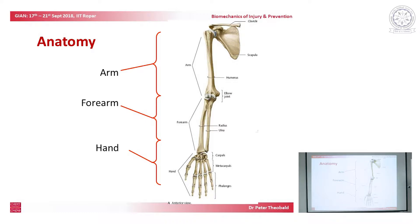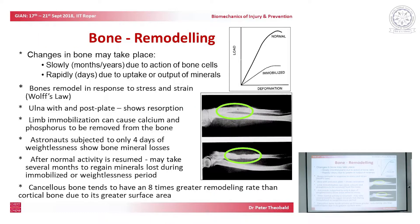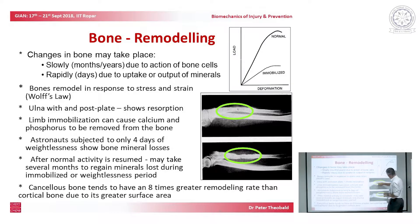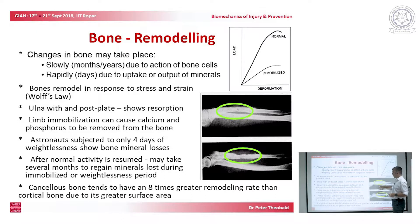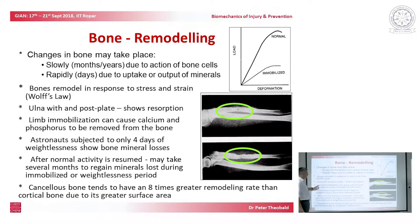This draws us to another bioengineering question: bone repair, and specifically the notion of bone remodeling. This is Wolff's Law, or stress shielding. Wolff's Law states that bones respond to stimuli of stress and strain. Here we have one of the bones in the forearm — the ulna. The top picture shows the plate in position, and then the consequence of that plate being removed.